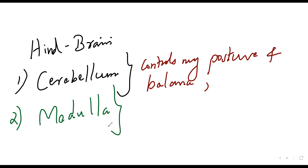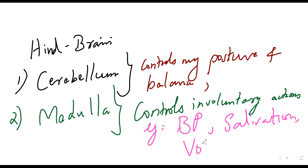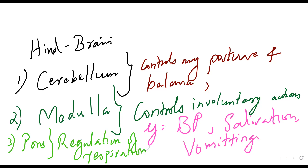The second part of the hindbrain is the medulla, which controls involuntary actions such as blood pressure, salivation, and vomiting. The third part is the pons, which is mainly responsible for the regulation of respiration.